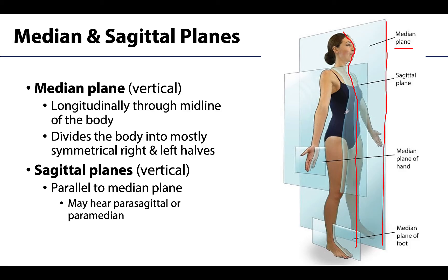Sagittal planes will pass through the body parallel to the median plane, so you can have multiple sagittal planes, just as long as they're parallel to the median. You will sometimes hear the term parasagittal, but really any sagittal plane is parallel to the median plane, so parasagittal is really just an added and unnecessary prefix — but this doesn't mean you won't hear it.